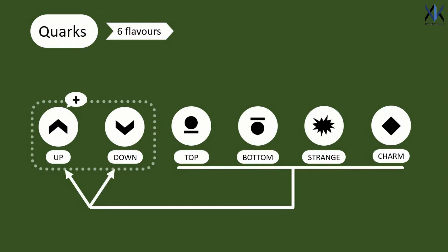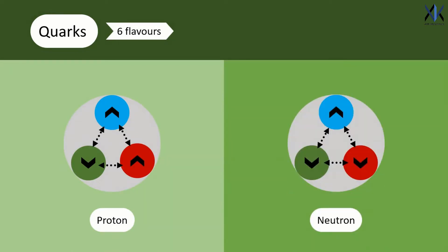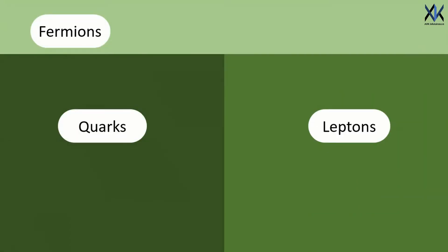Up quark has a slightly positive charge and down quark has a slightly negative. A proton consists of two up quarks and one down quark, while a neutron has one up and two down. That is a brief introduction of quarks.